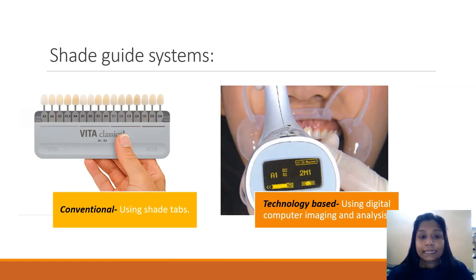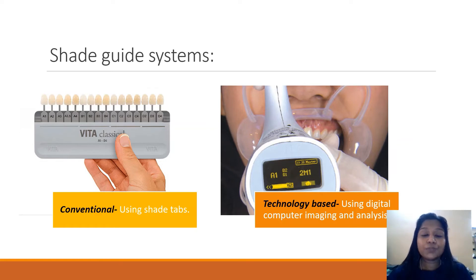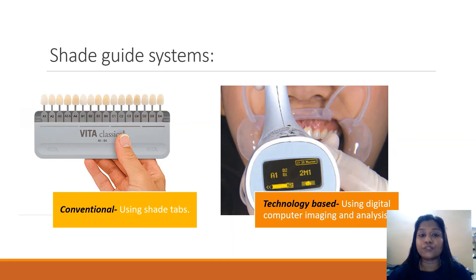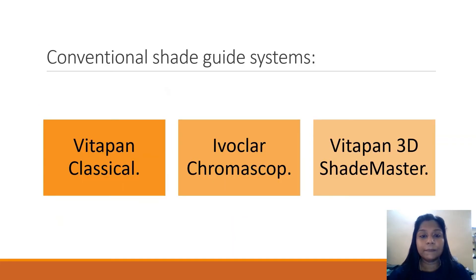The different shade guide systems available include the conventional method and the technological method. The conventional method is a manual approach, whereas the technological method is electronic.